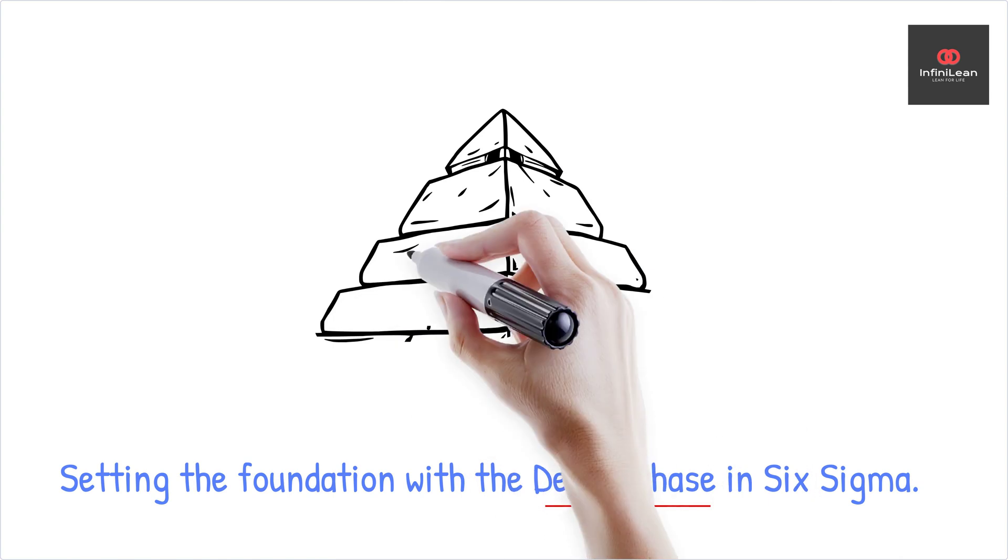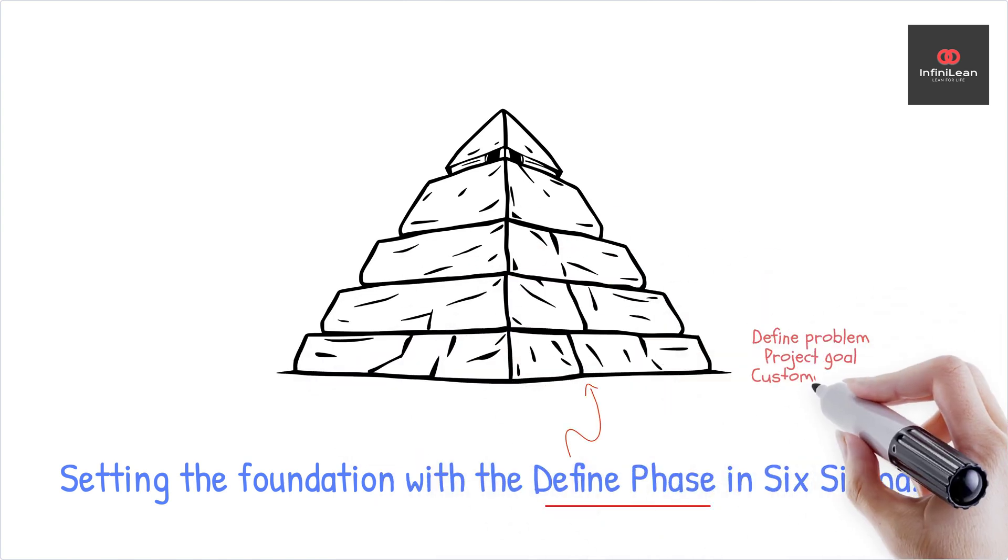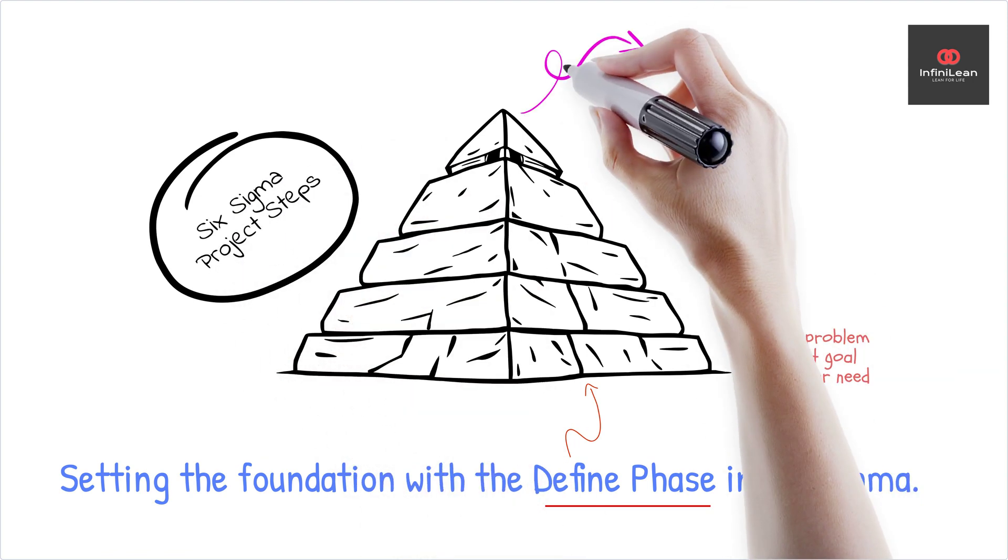The Define Phase sets the foundation for your Six Sigma project. It involves clearly defining the problem, project goals, and customer requirements. With a solid start, improvements will be practical, so this phase is vital.